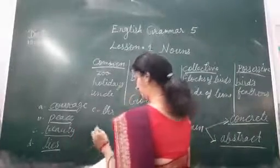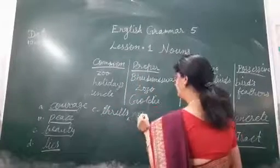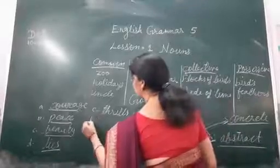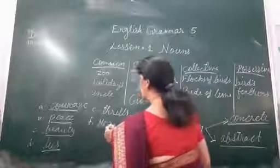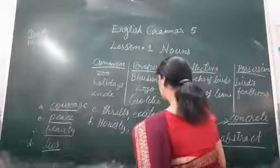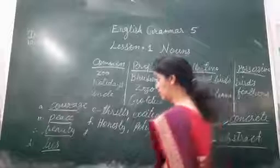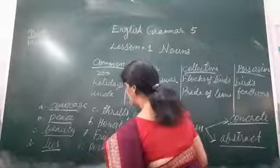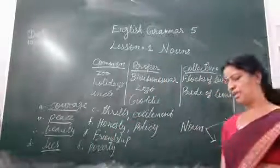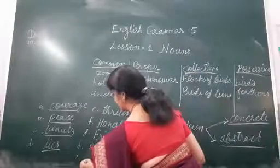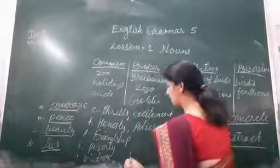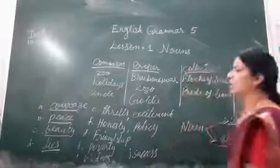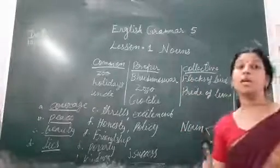The story was full of thrills and excitement. Thrill and excitement: underline these. Honesty is the best policy. Honesty and policy: underline them. Friendship knows no limits. Friendship: underline it. No human should live in poverty. Poverty: underline it. My sister was known for her kindness. Kindness: underline it. Success comes with hard work. Success: we can feel it. These are the abstract nouns which we can only feel.